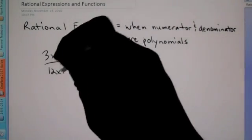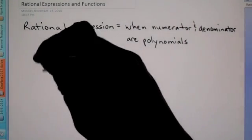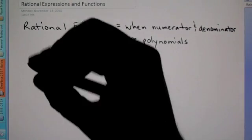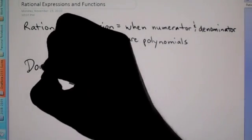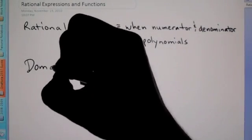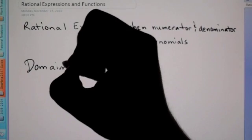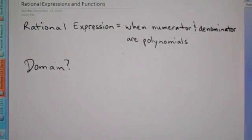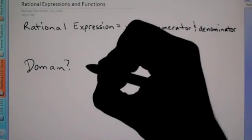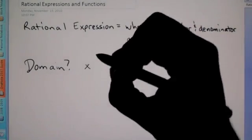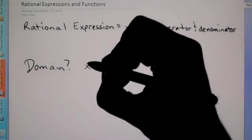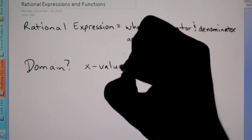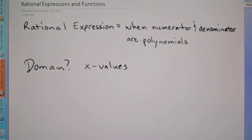How do we work with these? The first thing you're going to see is you'll be asked for the domain. The domain is all possible x values.